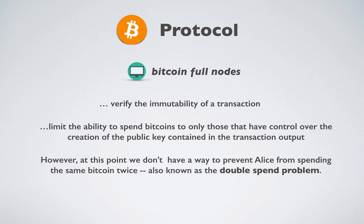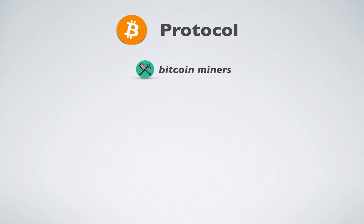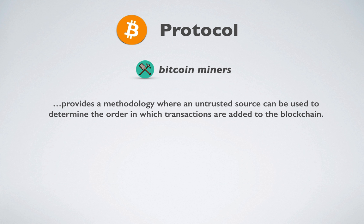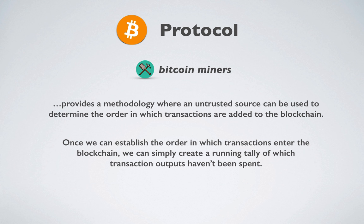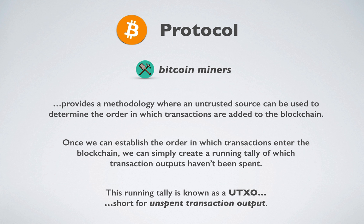However, at this point, we don't have a way to prevent Alice from spending the same bitcoin twice — also known as the double spend problem. That's where mining enters the workflow. Mining provides a methodology where an untrusted source can be used to determine the order in which transactions are added to the blockchain. Once we can establish the order in which transactions enter the blockchain, we can simply create a running tally of which transaction outputs haven't been spent, known as a UTXO — short for unspent transaction output.